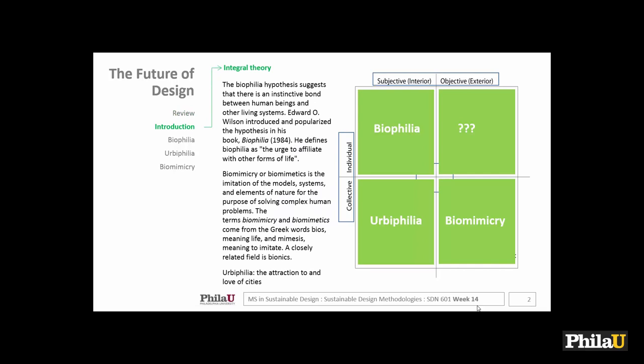The biophilia hypothesis — and I apologize for this slide — suggests that there is an instinctive bond between human beings and other living systems. This is EO Wilson, and you all read the book by now, right? He defines biophilia as the urge to affiliate with other forms of life.